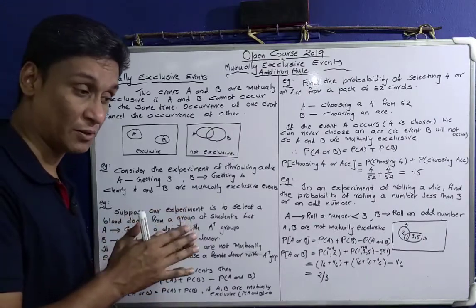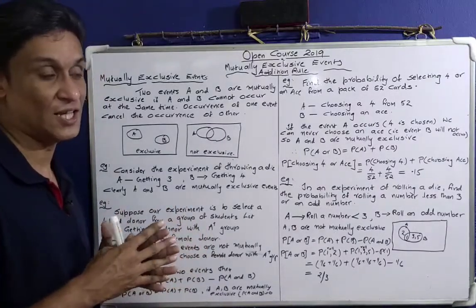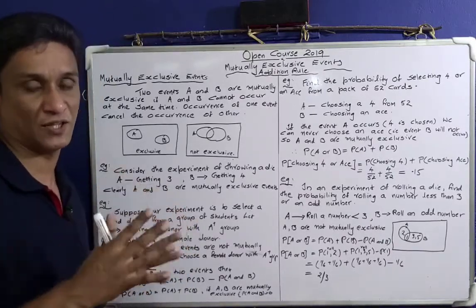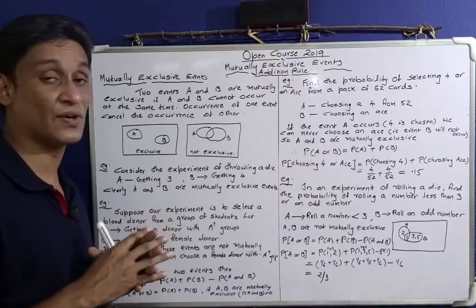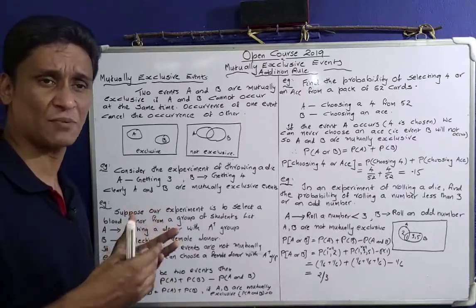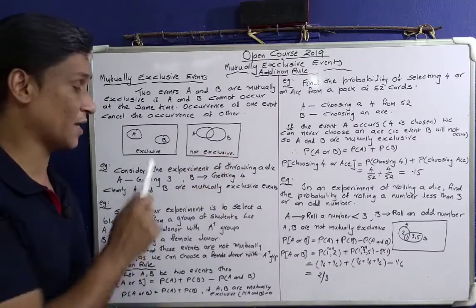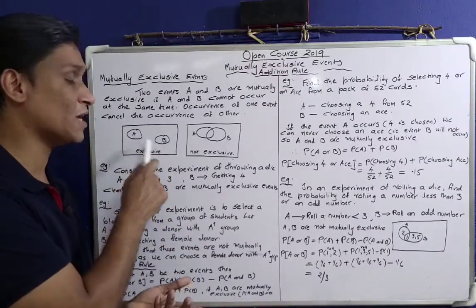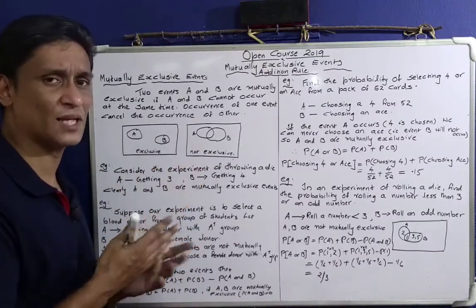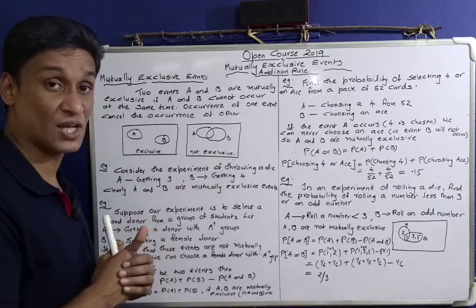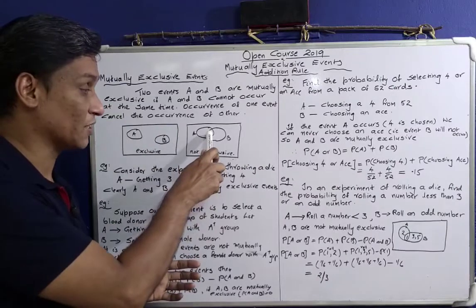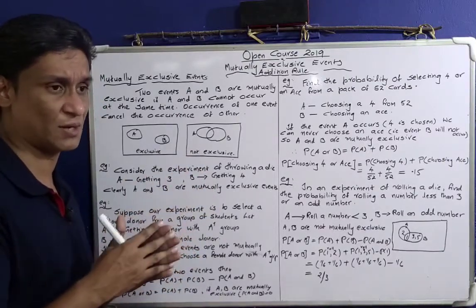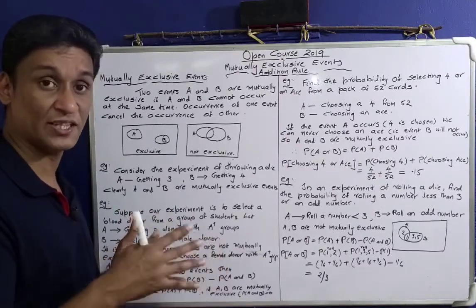For example, tossing a coin: tossing a coin and getting a head is one event; tossing a coin and getting a tail is another event. These are mutually exclusive — head and tail. One event excludes the other. In the diagram, when A and B are mutually exclusive, they are separate with no overlap. If A and B are not exclusive, there are common elements between them.